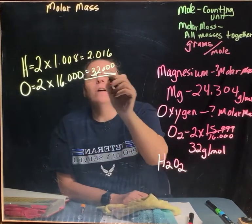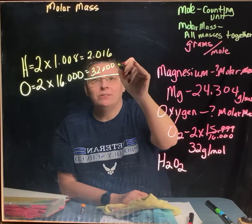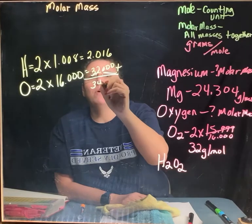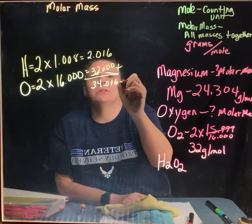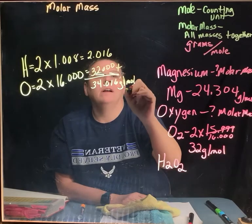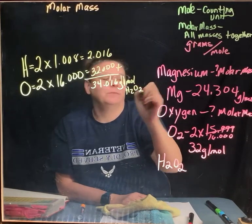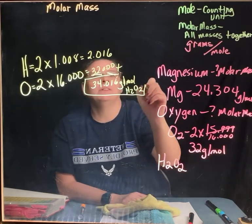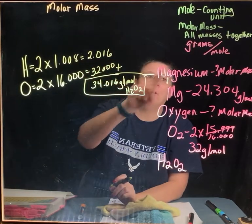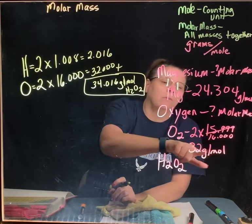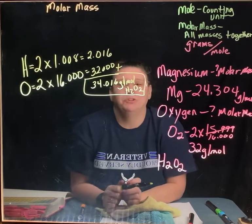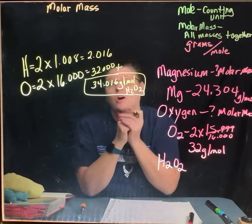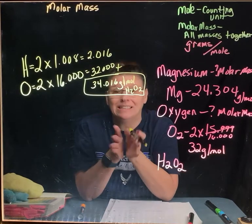So we multiply across, and you get 2.016, and you get 32.00. So now we multiply across. Now we're going to add down. When I add it down, I end up with 34.016 grams per mole of H2O2. So when you're working with substances like this, you must have grams per mole. Grams per mole. Grams per mole. And then the substance, H2O2. That's what we're working with.